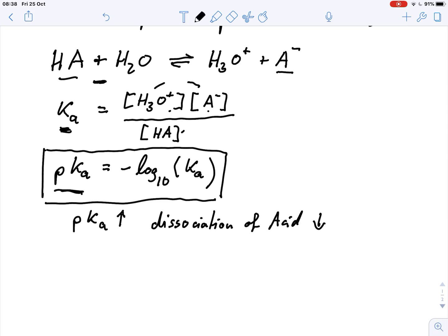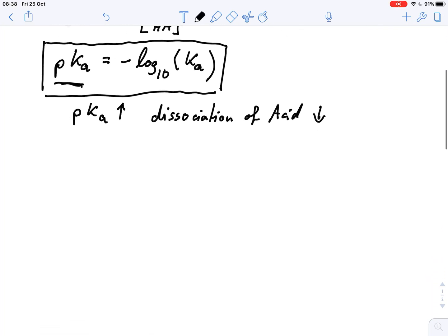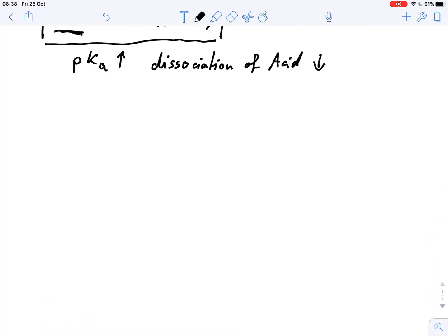The higher the pKa, the weaker the acid. The lower the pKa, the stronger the acid. Now we can do a very similar thing for the pKb value.